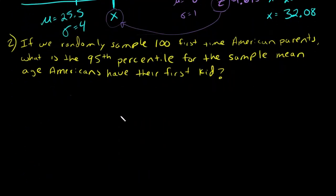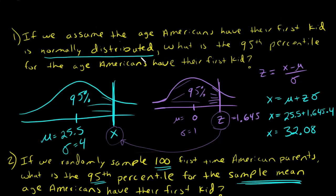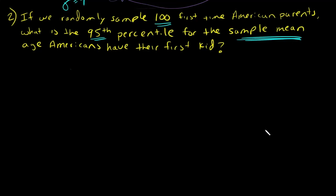The next question is slightly different. We are going to assume that we're taking a random sample of 100 first-time parents and we want to find the 95th percentile for that sample mean. Notice in this example we do not assume the normal distribution — there's no need because we have the Central Limit Theorem, or CLT. The CLT tells us that x-bar is normally distributed as long as our sample size is large enough, and 100 would tend to be large enough for us to say x-bar is normally distributed.